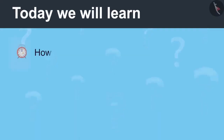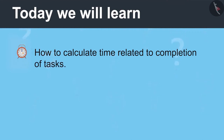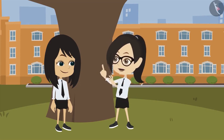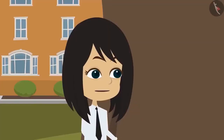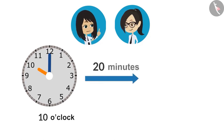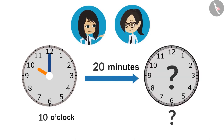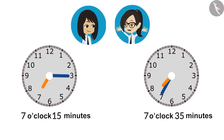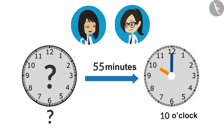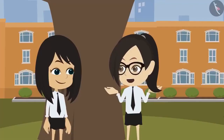Today we will learn how to calculate the time related to completion of tasks. Let us ask each other some questions related to what was learned last time. Last time we learned three things: if the start time and duration are known, we can find the end time; if the start time and end time are known, we can find the duration; and if the end time and duration are known, we can find the start time.